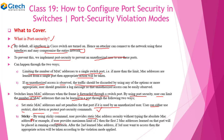For example, if the user sets a maximum of two users, then the first two MAC addresses that land on that port will be placed in the running configuration. After the second learned MAC address, if a third user tries to access the port, then the appropriate action will be taken through the violation mode applied. You specify how many users can access the port, and if that number is exceeded, a violation mode is triggered.